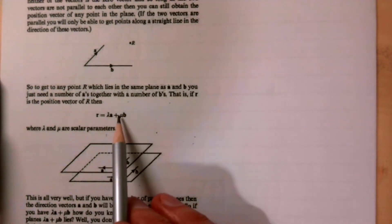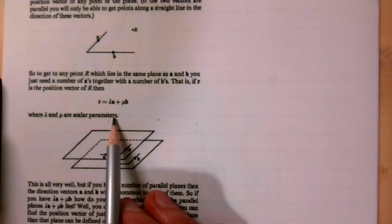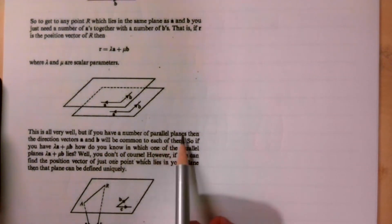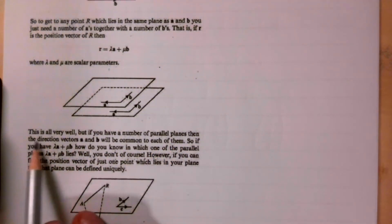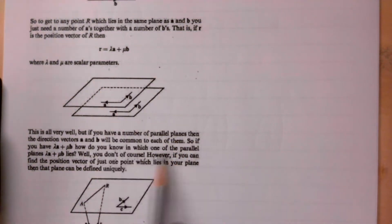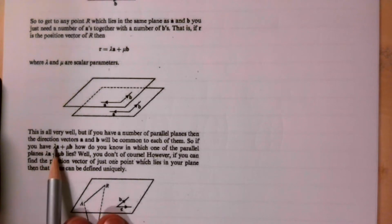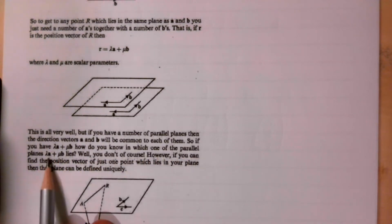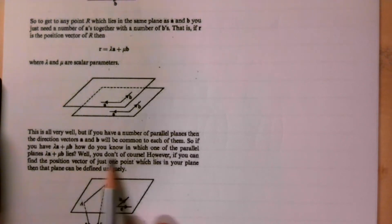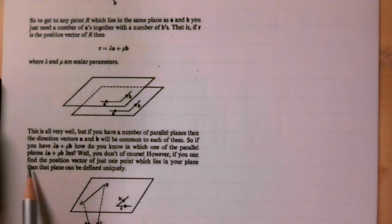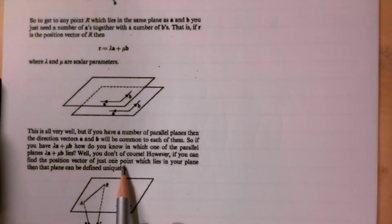Our certain number of a's is lambda and our certain number of b's is mu, where lambda and mu are scalar parameters. However, if you have a number of parallel planes, the direction vectors a and b will be common to each of them. So with just lambda*a + mu*b, you don't know which parallel plane they lie in. However, if you can find the position vector of just one point which lies in your plane, then that plane can be defined uniquely.